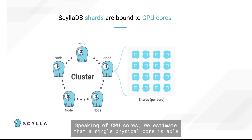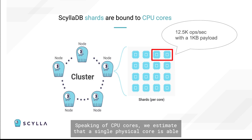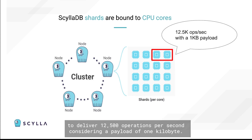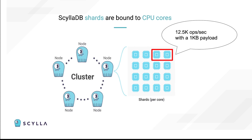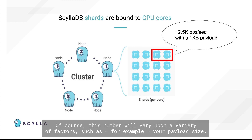Speaking of CPU cores, we estimate that a single physical core is able to deliver 12,500 operations per second, considering a payload of one kilobyte. Of course, this number will vary upon a variety of factors, such as, for example, your payload size.